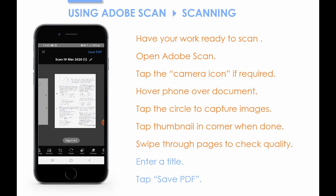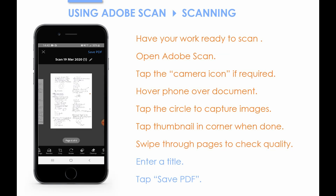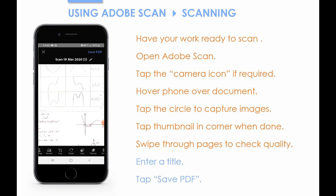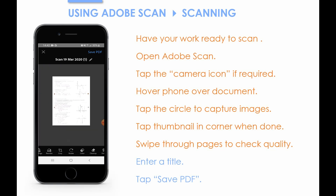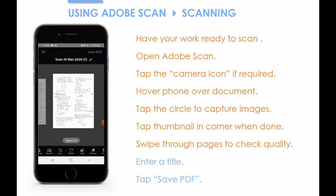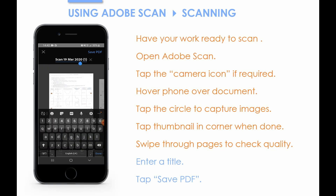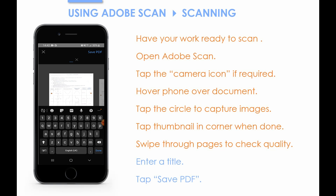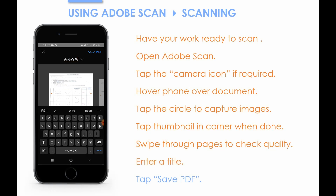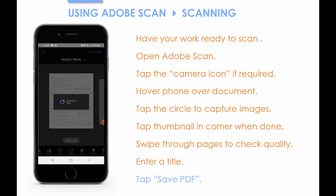If you notice that any of the scans aren't of the quality you would like, there are a number of options in order to modify them — however, we'll cover those in a later video. Assuming you're happy with all the scans, enter a title so that you'll recognise it in the menu, and then tap Save PDF.